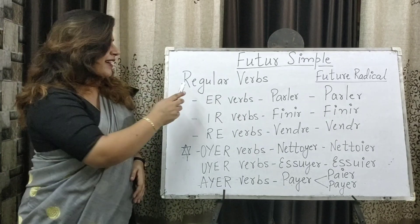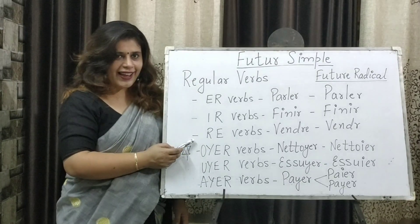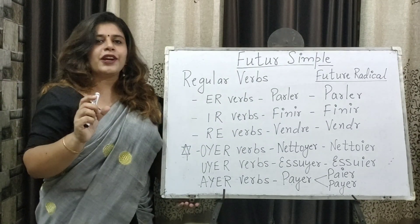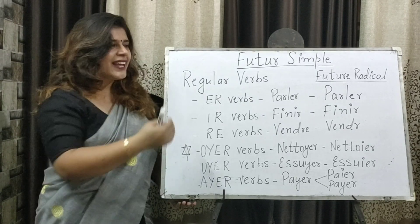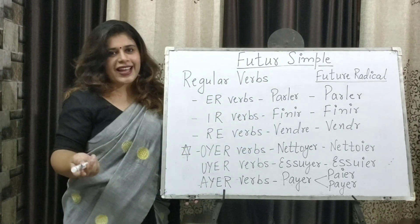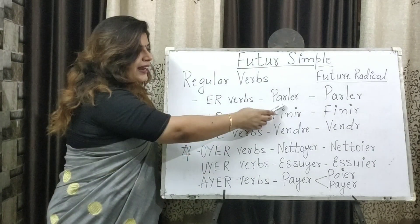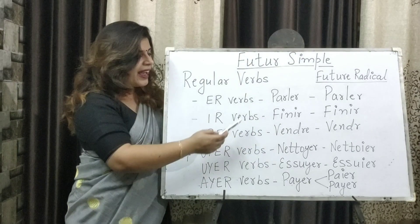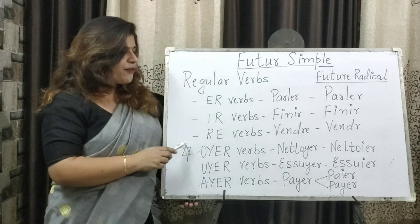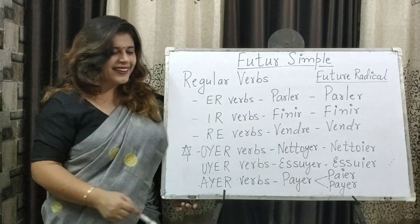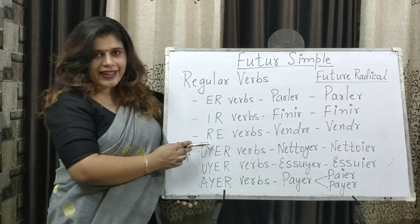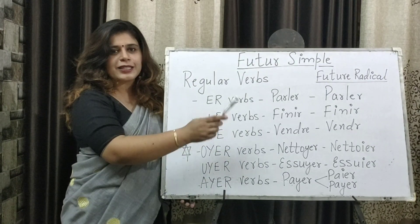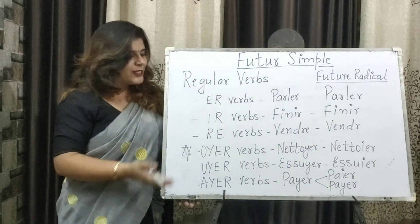Let's learn how to make the future radicals of all the regular verbs. Regular verbs have 3 categories: ER, IR, and RE. For ER verbs, example parler, we don't need to change anything — the infinitive is used as the future radical, as it already ends with R. For IR verbs, similarly, finir already ends with R so the infinitive becomes the future radical directly. For RE verbs, there is an E at the end, so we remove that E to get the future radical. Example: vendre — we drop the E to get vendr.